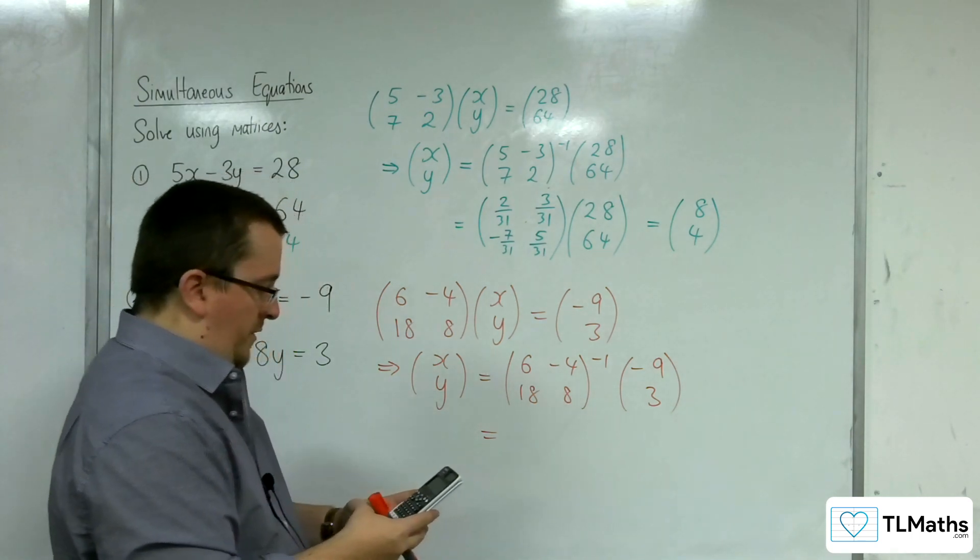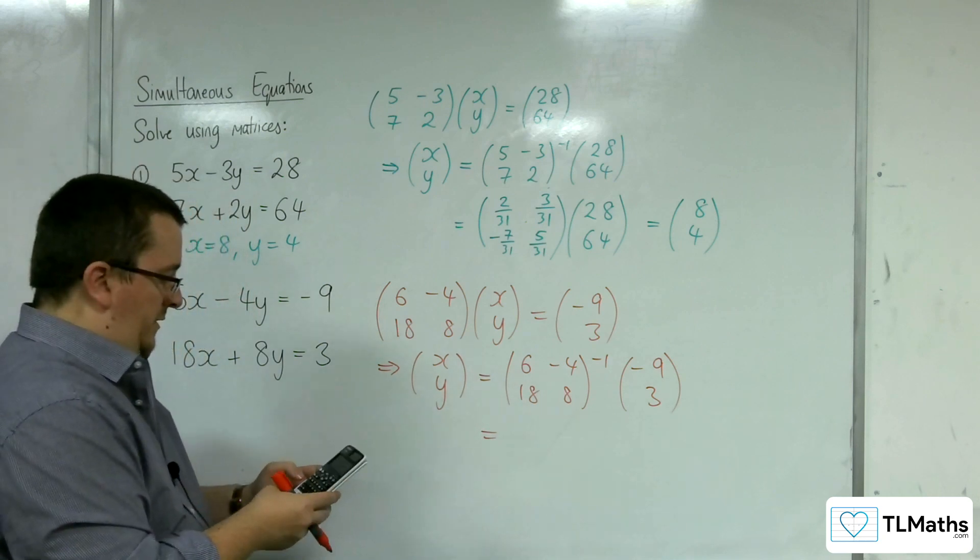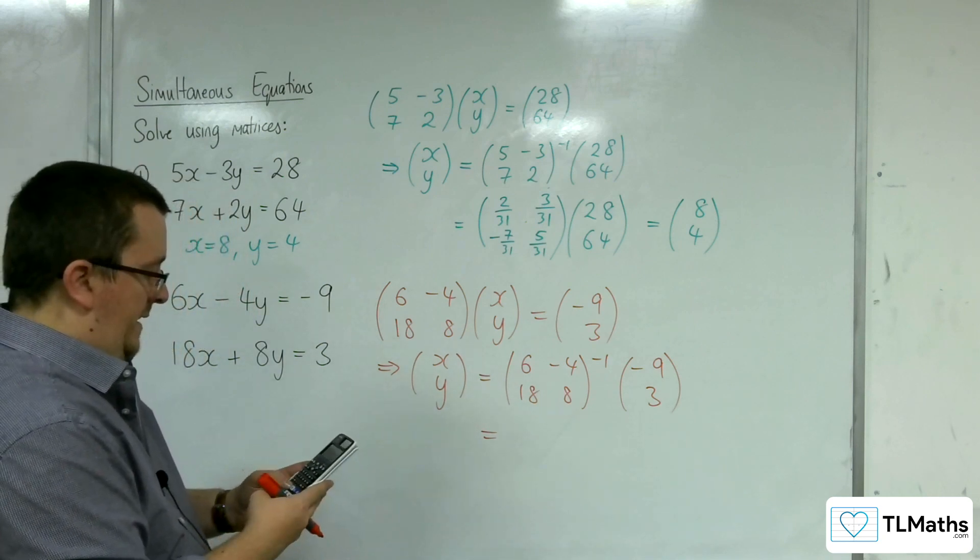Define matrix A, 2 rows, 2 columns. We've got the 6, -4, 18 and 8.